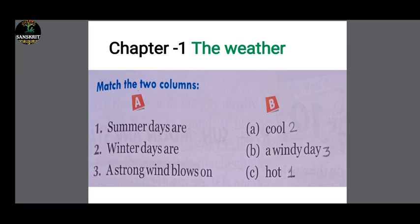We take Chapter 1. You have two columns, A and B. In column A you have 1, 2, 3, and in column B you have A, B, C. So we match column A with B. First: Summer days are hot.